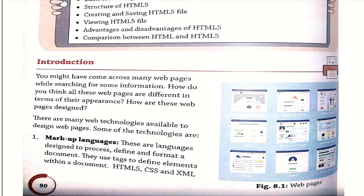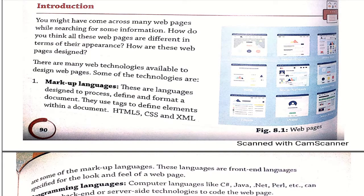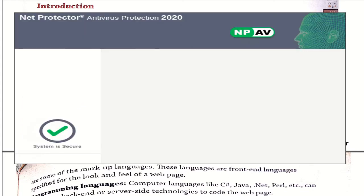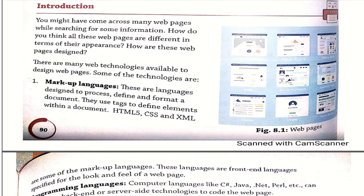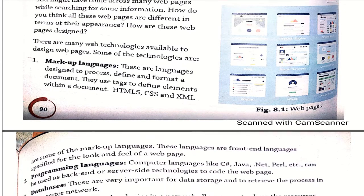What is HTML? Before starting HTML, we should know what web technologies are available to design web pages. Some of the technologies available are markup languages — these are languages designed to process, define, and format a document. They use tags to define elements within a document, like HTML5, CSS, and XML.